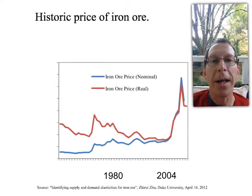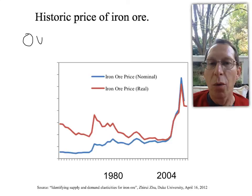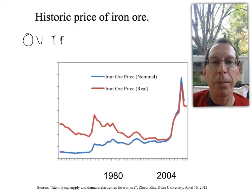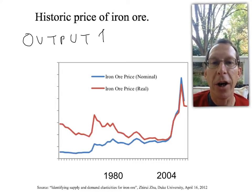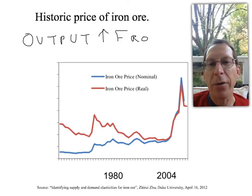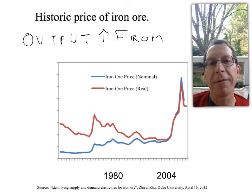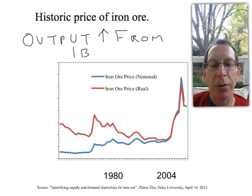So what's happening with quantity? Well, quantity has also been fairly flat throughout the 1980s and 1990s at about one billion tonnes of iron ore produced worldwide each year. Then around 2002 to 2004 production starts to rise.